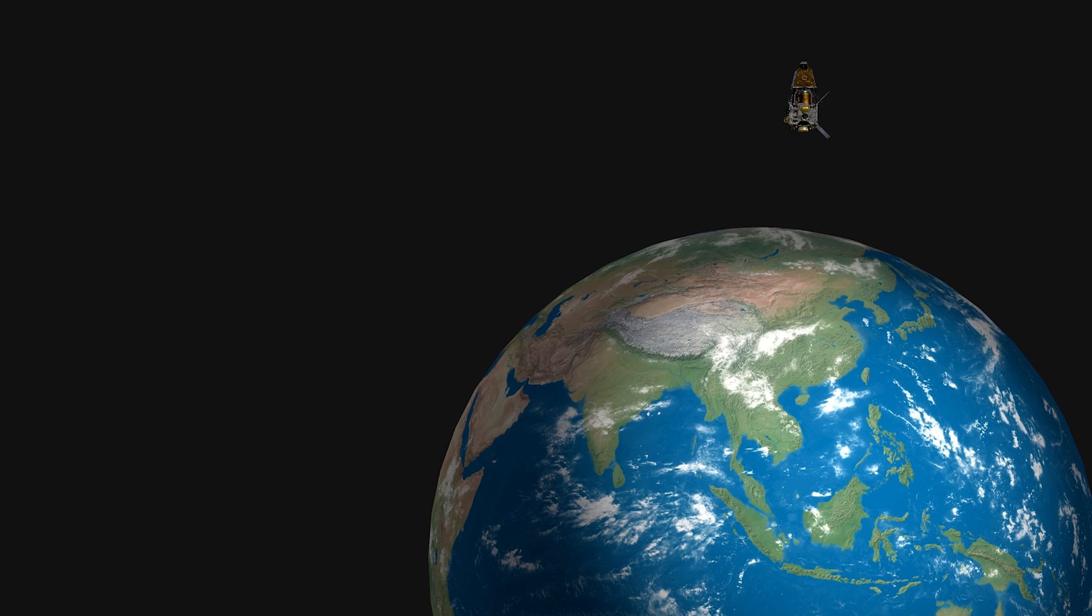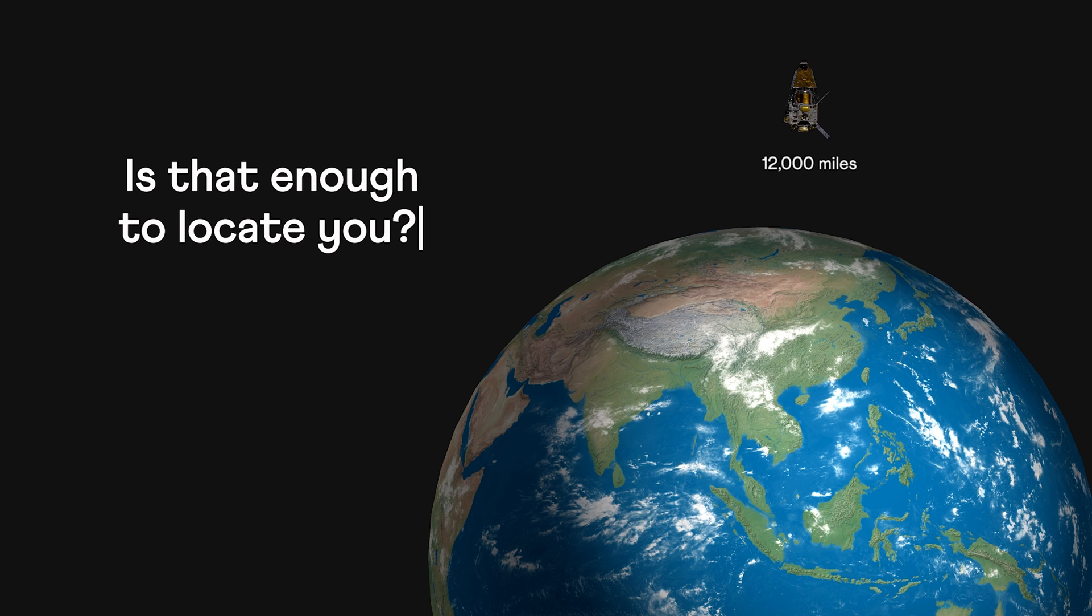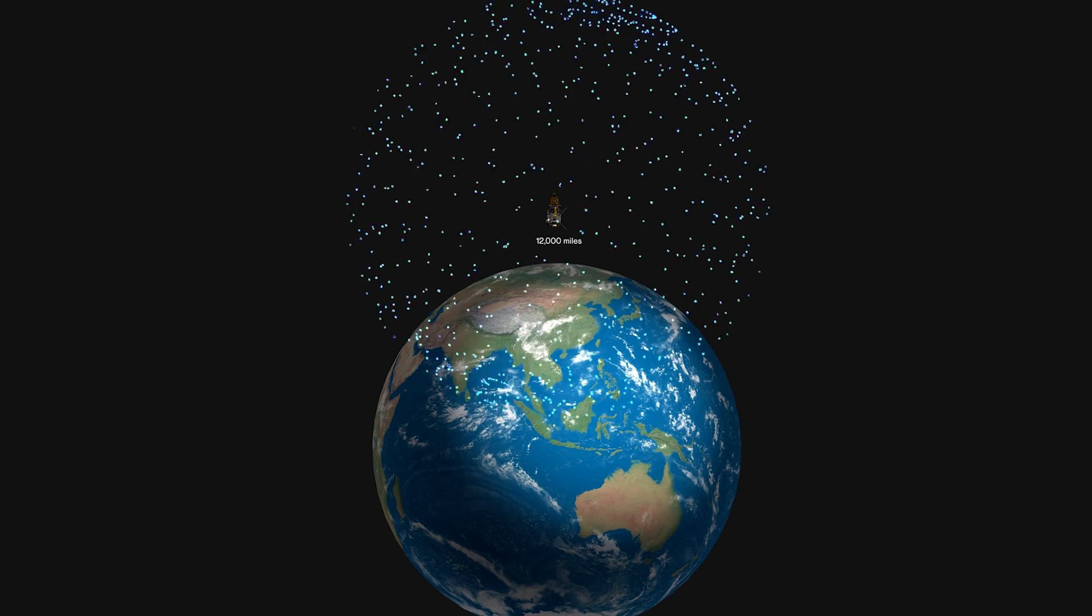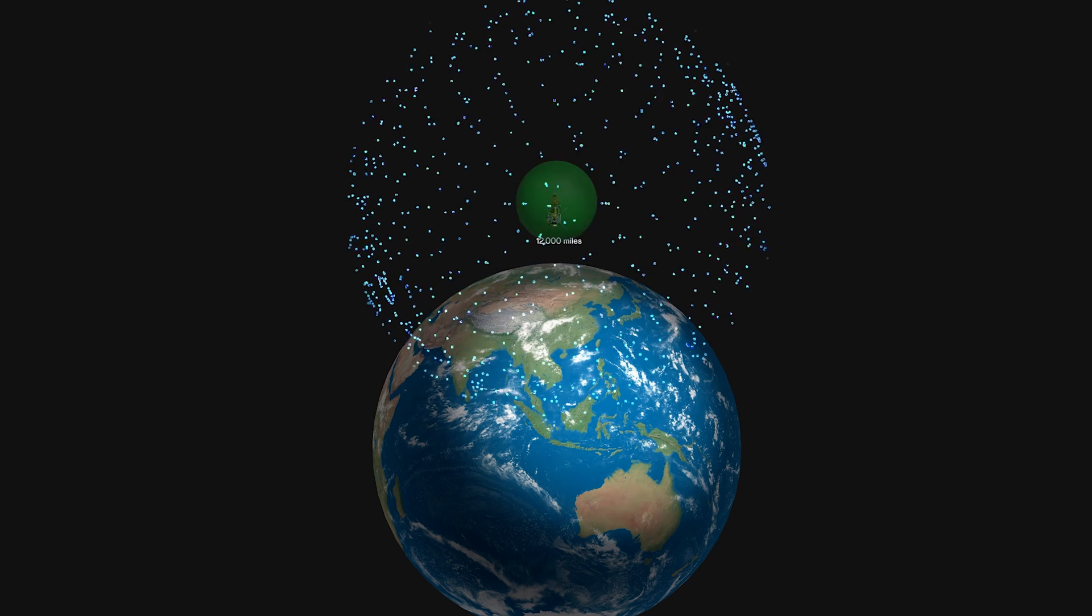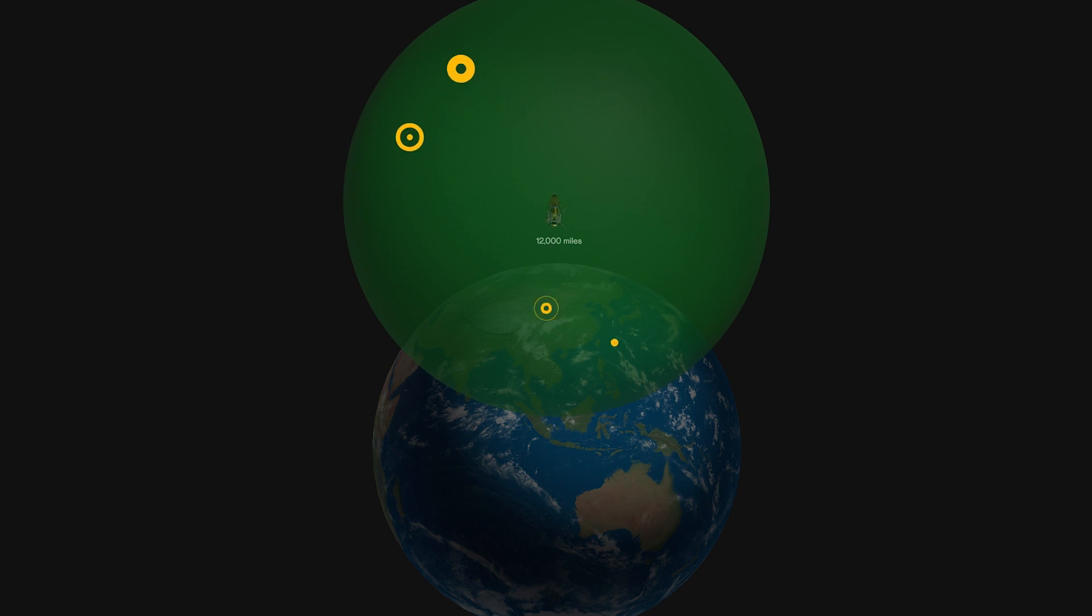Say we have just one satellite, and your phone knows that you are 12,000 miles away from it. Is that enough to locate you on earth? There are many points that are 12,000 miles from the satellite, forming a sphere, and you could be anywhere on this sphere. So one satellite is not enough.